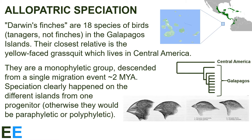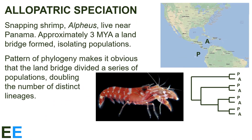I've put links to scientific papers with more details in the video description below. This phylogeny is a version of one from a paper in the AUK published in 2018. Throughout this video I've simplified the examples, but if you want all the details, just check out the original papers. Another example of allopatric speciation comes from snapping shrimp in the genus Alpheus, which live near Panama. Approximately three million years ago a land bridge formed, isolating populations of the shrimp on each side. The pattern of the phylogeny for these shrimp makes it obvious that the land bridge divided a series of populations, doubling the number of distinct lineages. Geologic features that can isolate populations change all the time — land bridges form, continental plates move, rivers change their courses — providing ample opportunity for allopatric speciation.